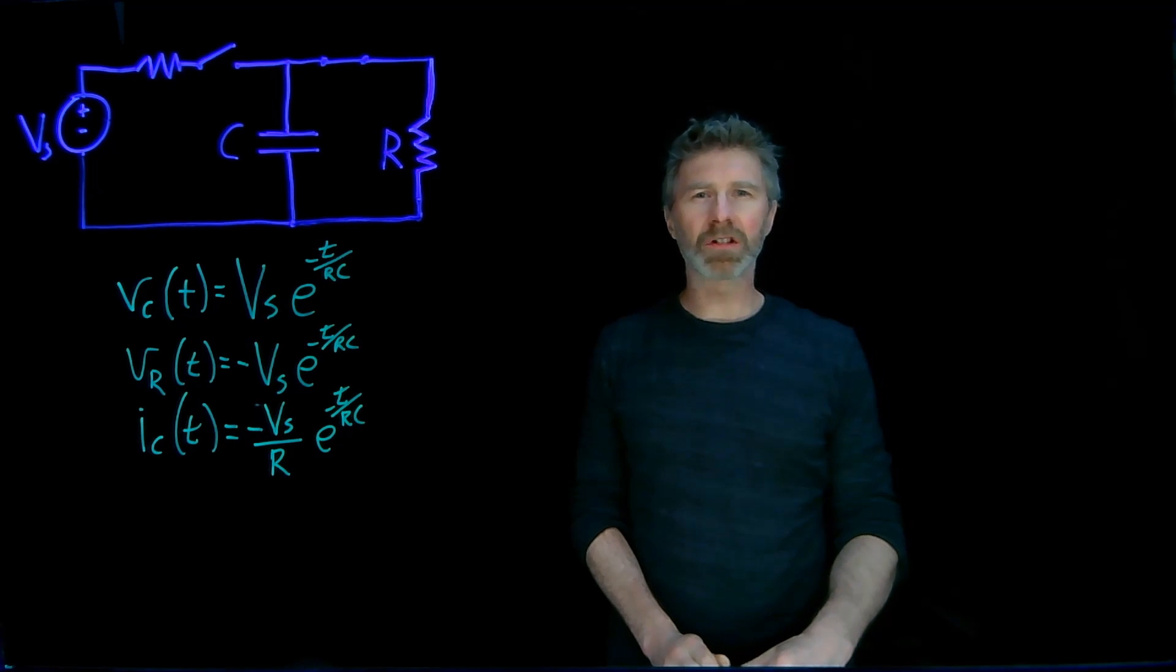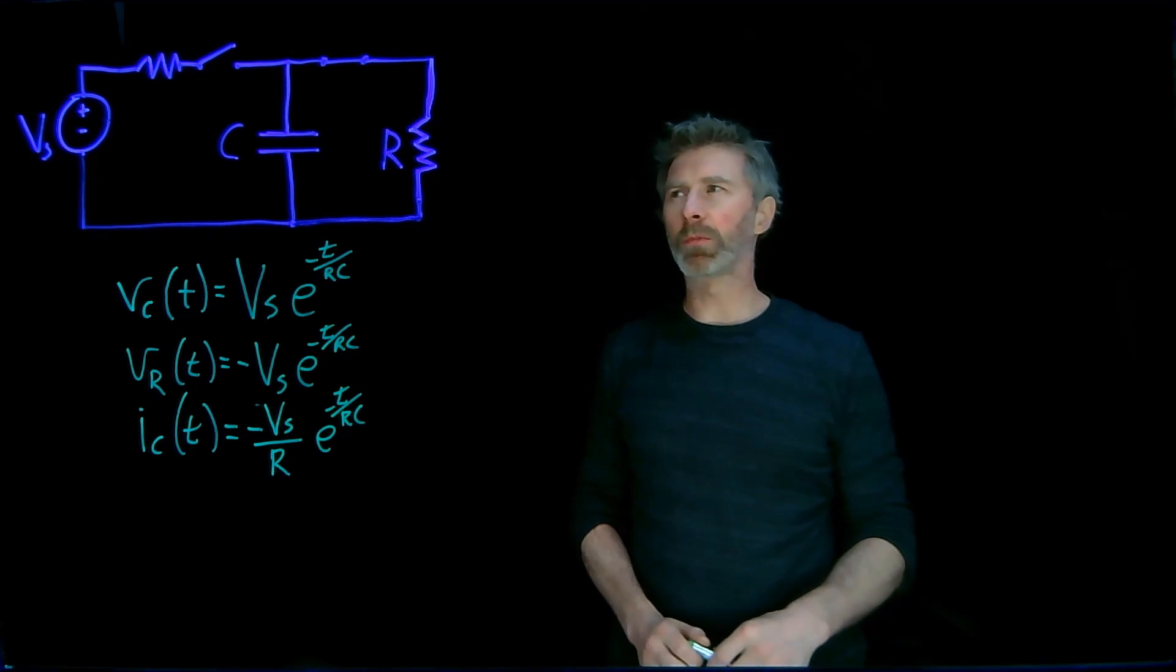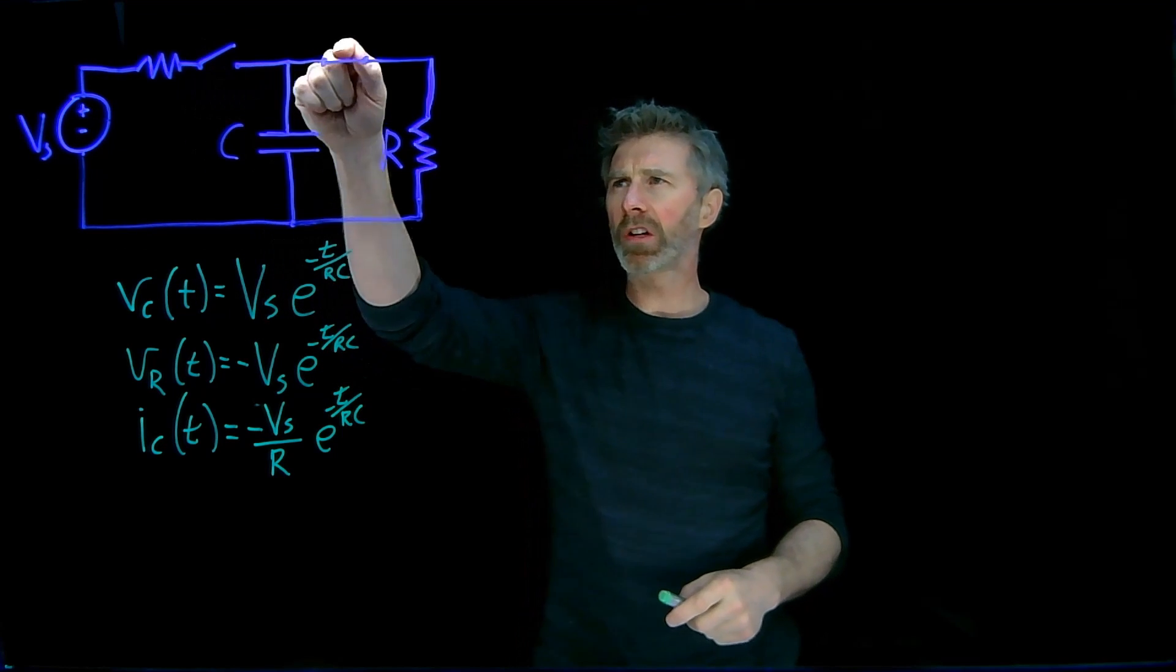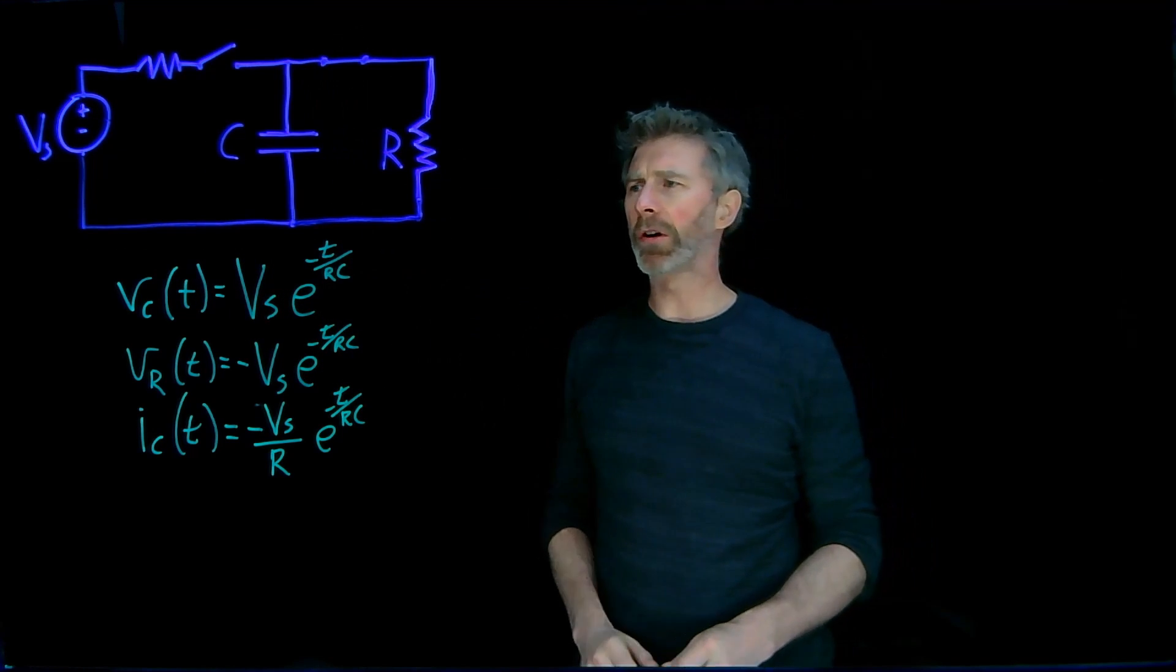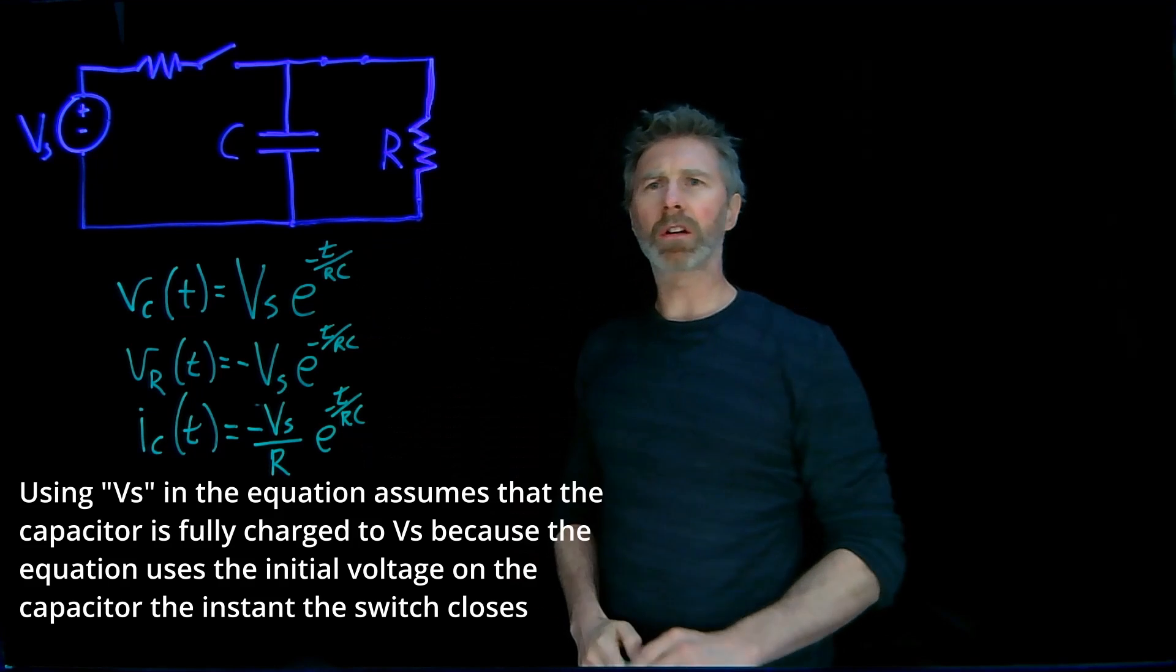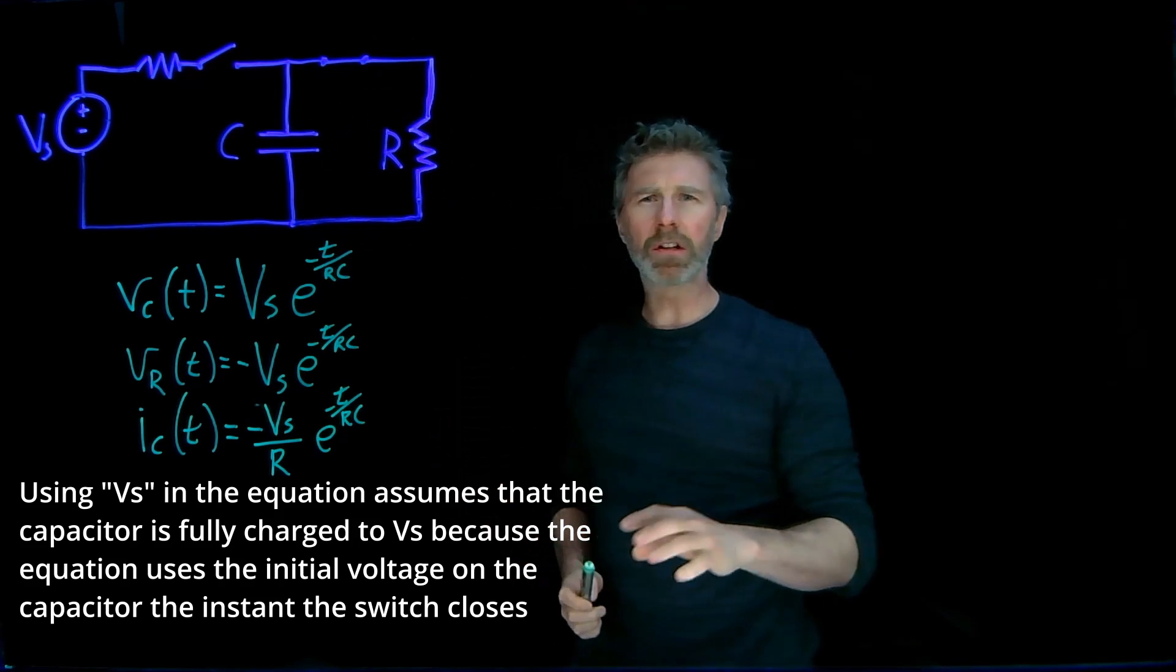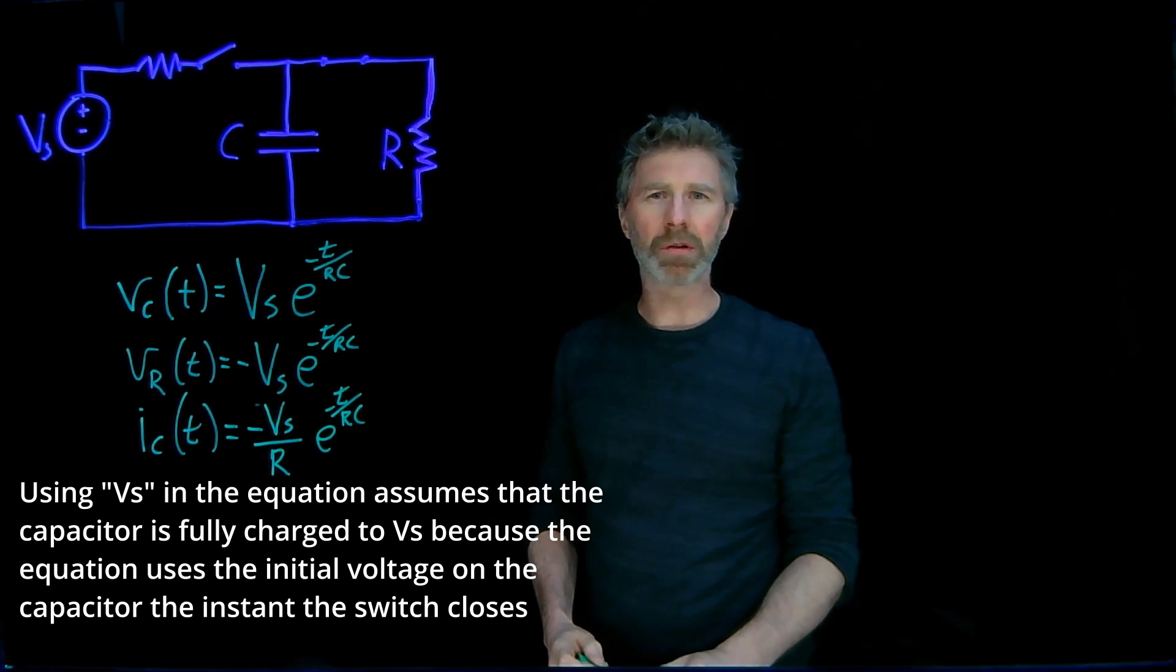So I've drawn that discharging capacitor circuit here on the glass board. Actually, here on the left-hand side, this is the charging capacitor circuit, but I've opened the switch and closed the switch for the discharging part. And these are the equations for the components in the discharging circuit. I'll actually redraw this part of the circuit here and label the voltages and currents appropriately.